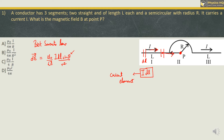The position vector from point P to this current element will be towards the left, and therefore the angle here is 180 degrees. For the third element, the current element will also point towards the right, and the position vector from point P to this current element will also point towards the right — so they are in the same direction, giving theta equal to 0. For theta equal to 0 and theta equal to 180, sin theta equals 0. So there is no magnetic field due to the first and third segments.